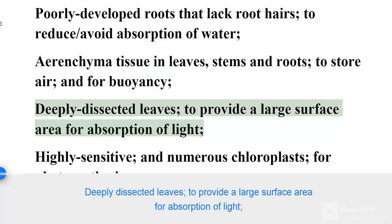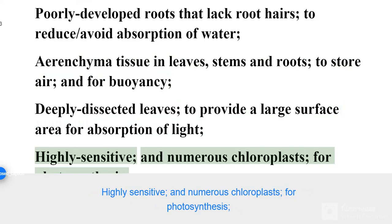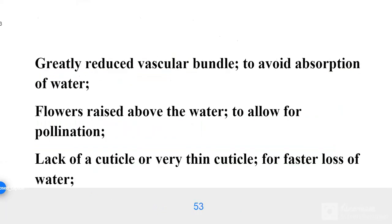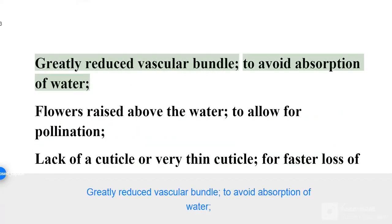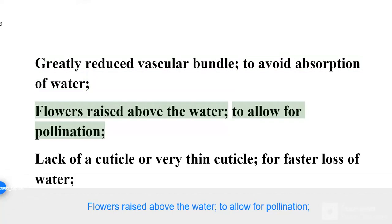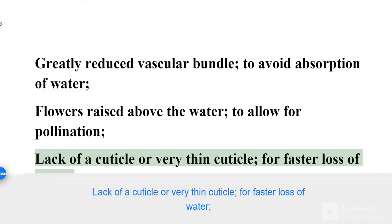Deeply dissected leaves to provide a large surface area for absorption of light. Highly sensitive and numerous chloroplasts for photosynthesis. Greatly reduced vascular bundle to avoid absorption of water. Flowers raised above the water to allow for pollination. Lack of a cuticle or very thin cuticle for faster loss of water.